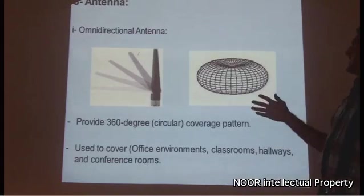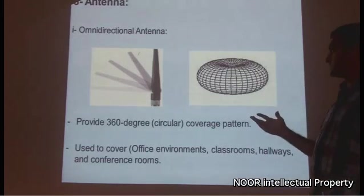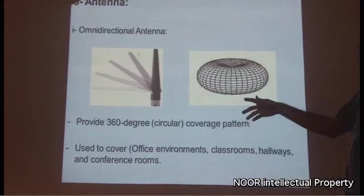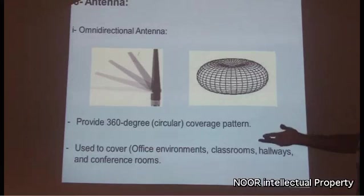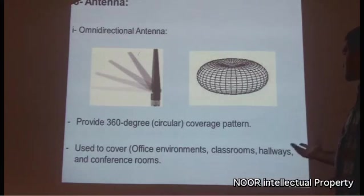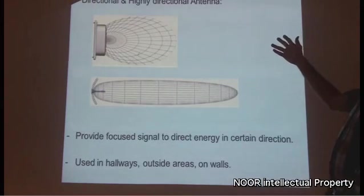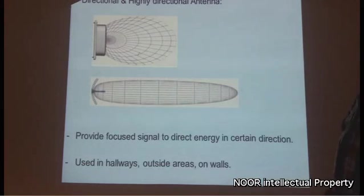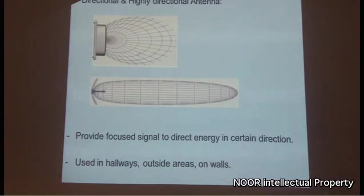The third component is antennas. There are many types of antennas. The first is the omnidirectional antenna, which provides a 360-degree coverage pattern and is used to cover office environments, classrooms, hallways, and conference rooms. Directional and highly directional antennas provide focused signals that direct energy in a certain direction, and are used in hallways, outside areas, and similar environments.